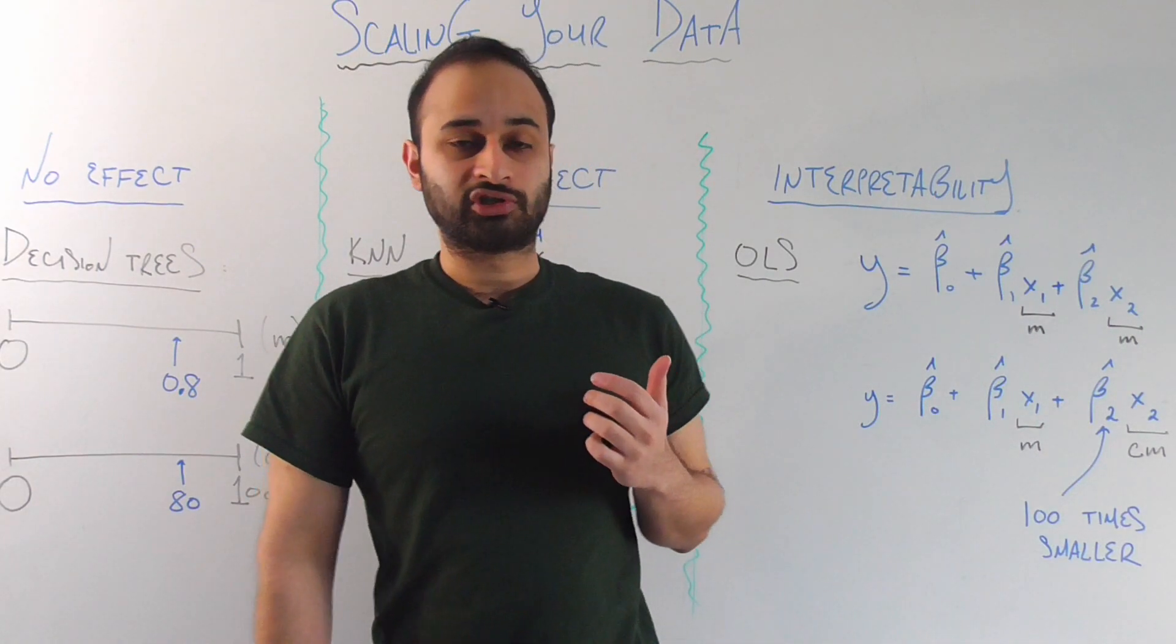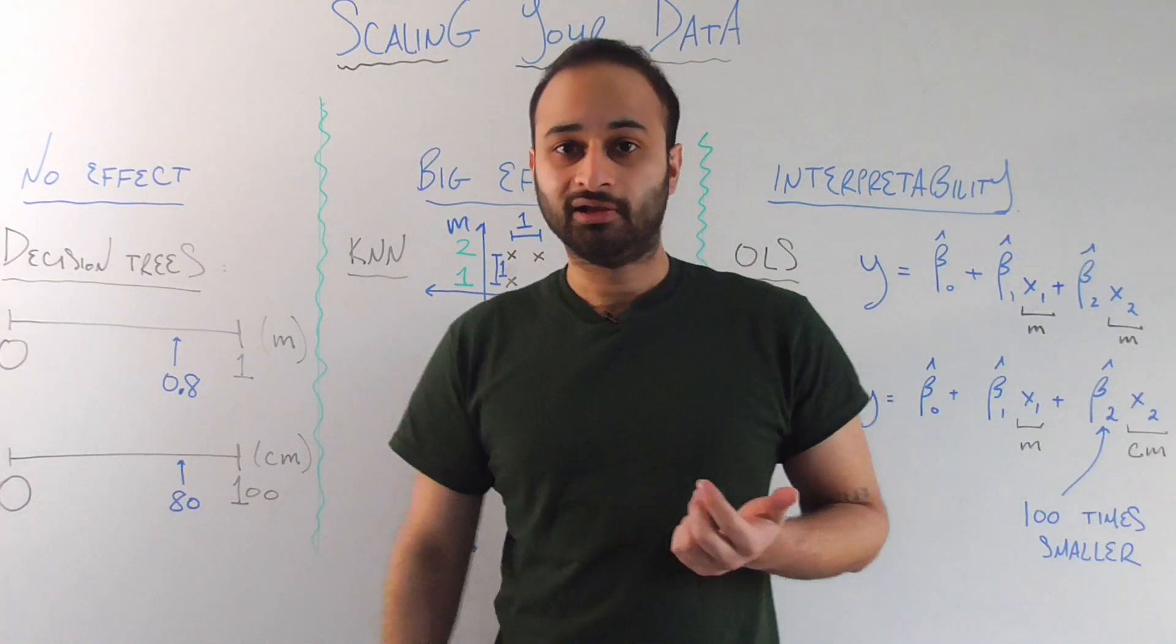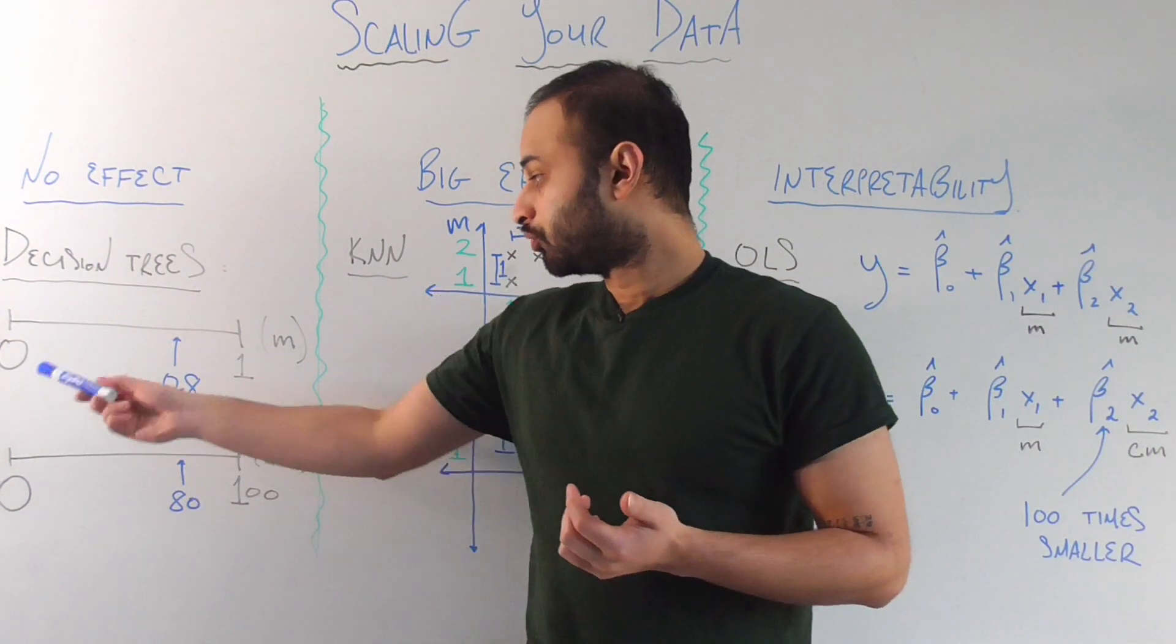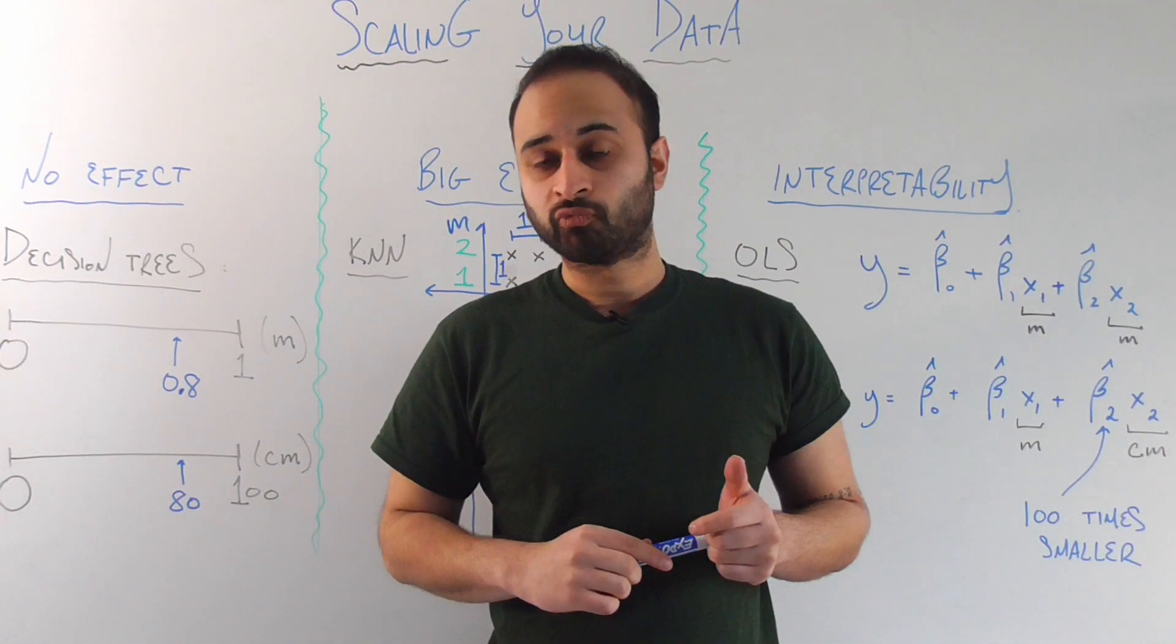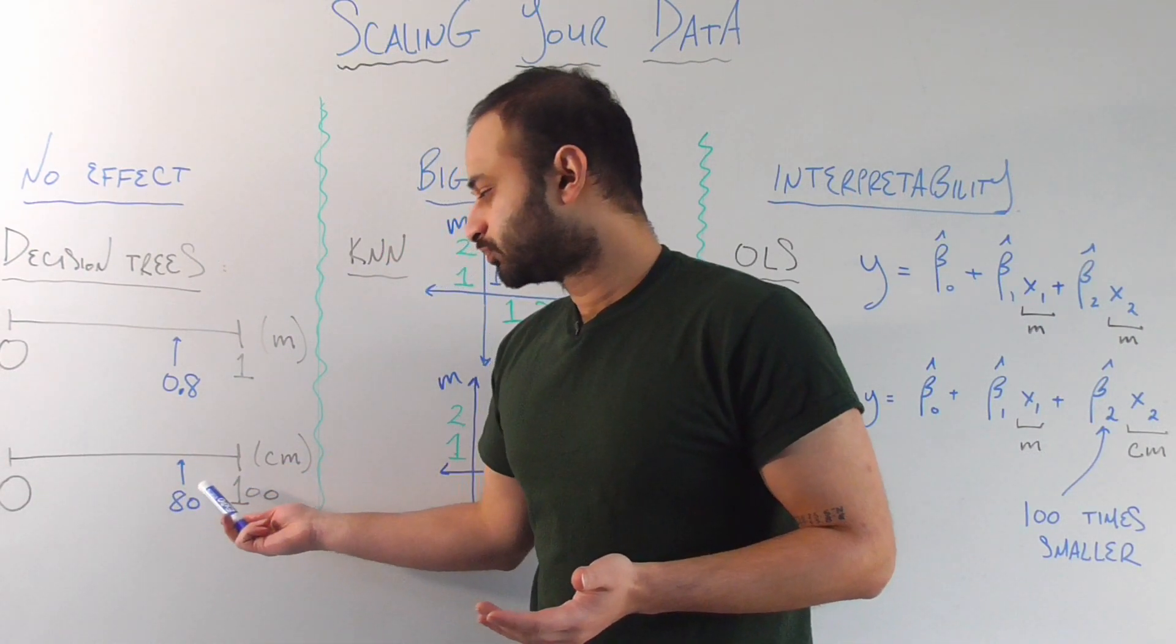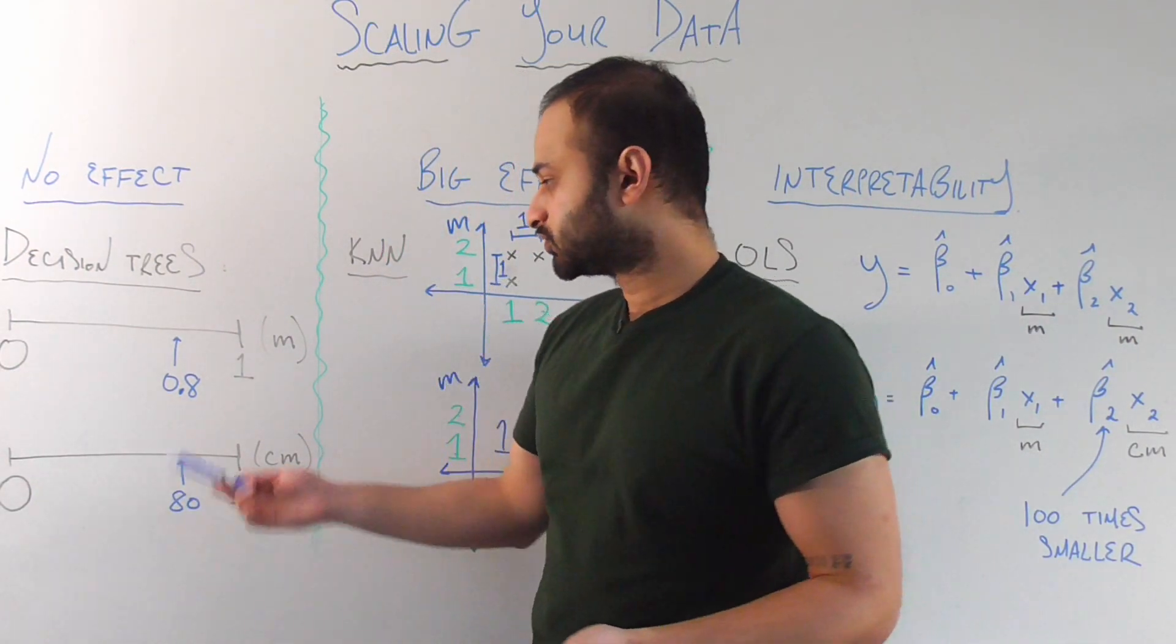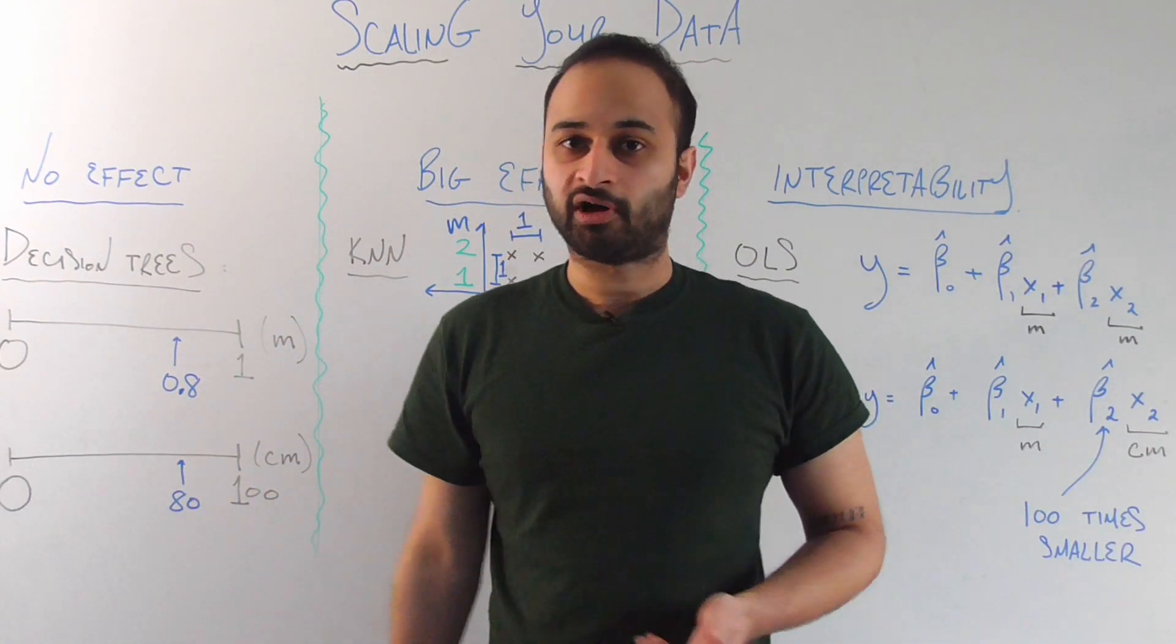Now let's say that your data was on a different unit system. So let's say it was measured in centimeters instead. So now your range is not 0 to 1, but 0 to 100 because there's 100 centimeters per meter. Now it does not affect the decision tree at all because it's going to find the same relative split at 80. So before it was 0.8 because it was max of 1. Now it's 80 because it's a max of 100.